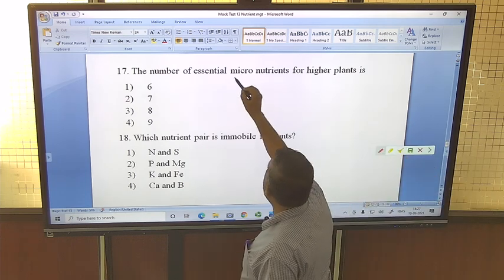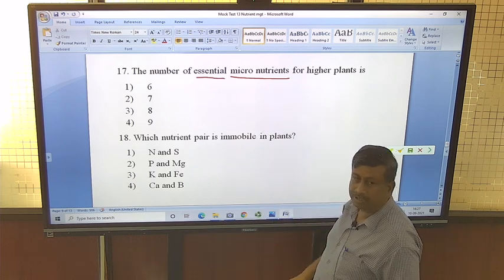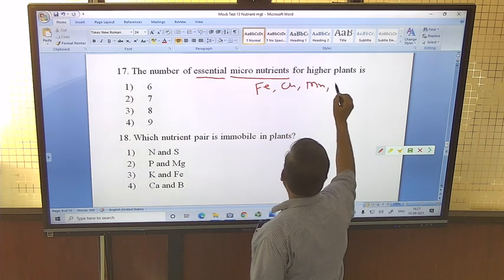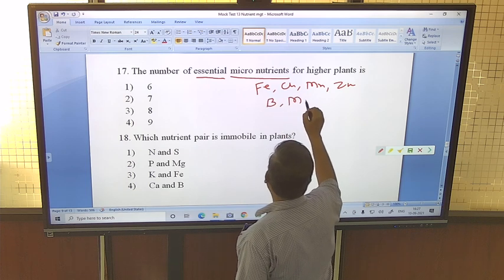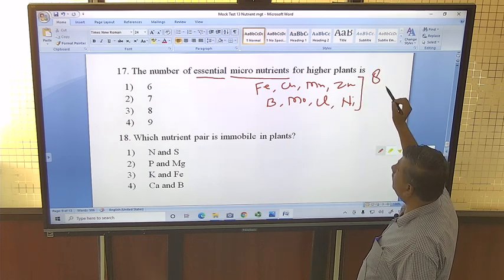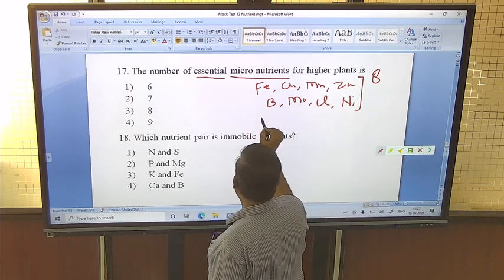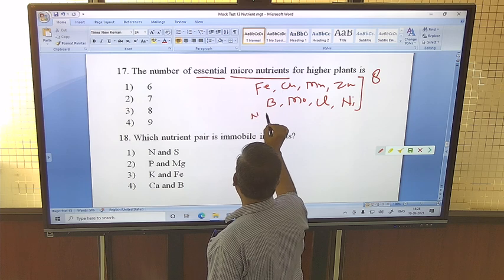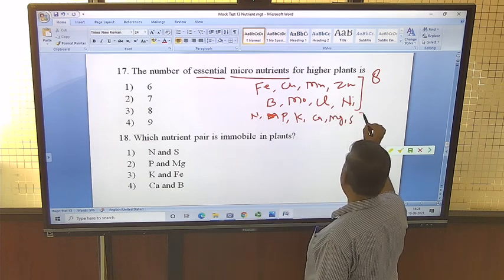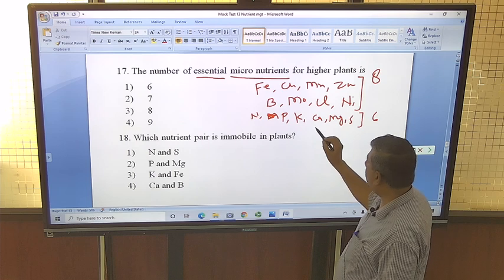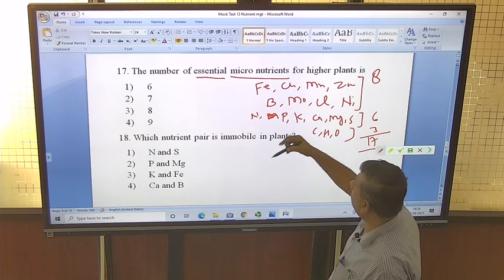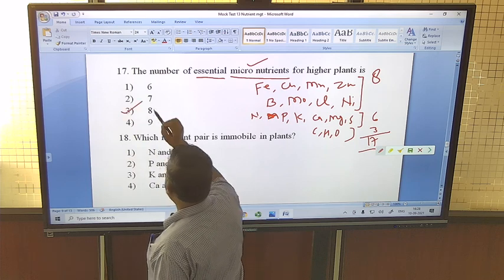Number of essential micronutrients for higher plant is - sometimes it may be confusion, so write down all the micronutrients: Fe, Cu, Mn, Zn, Boron, Molybdenum, Chlorine and Nickel. These are 8 micronutrients. Then N, Nitrogen, Phosphorus, Potassium, Calcium, Magnesium, Sulphur - these are 6, and basic structure of all biological molecules are 3, so now this is 17. Here question is about essential micronutrients, so here answer is 8.